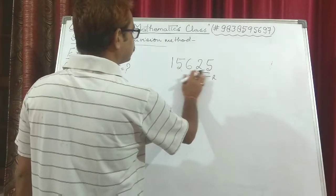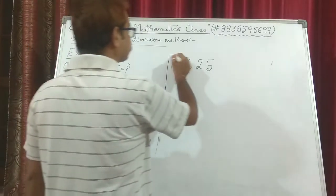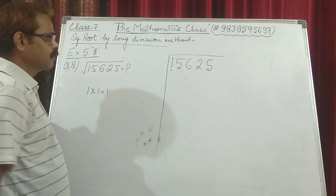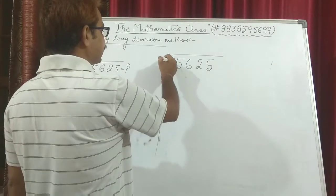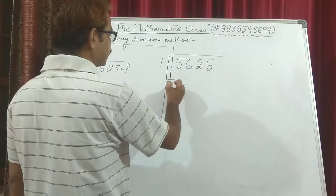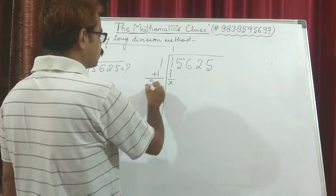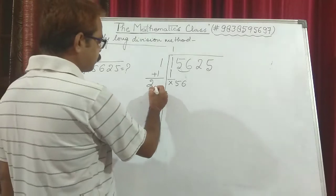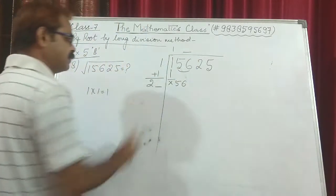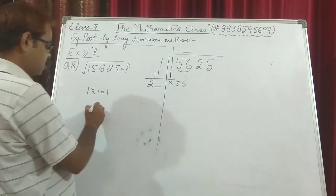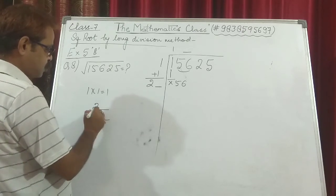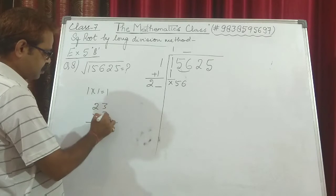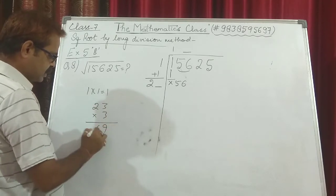We need a number which when multiplied by itself gives 1. That is 1. So 1 into 1 is 1; nothing is left. 1 is added to this 1 giving 2. We carry down the next pair: 56. Now which number should come so that 2-something times that same something is less than or equal to 56? If we check by 3: 23 times 3 is 69, which exceeds 56. So we check by 2: 22 times 2 is 44, which works.